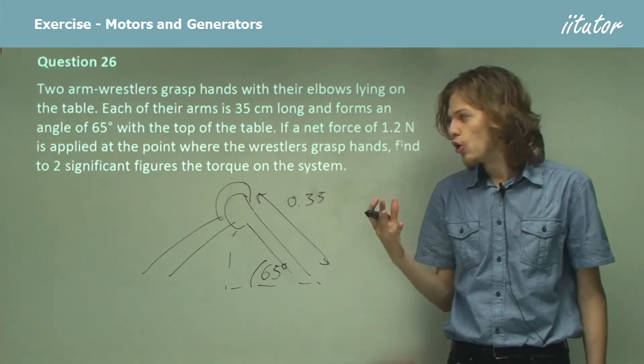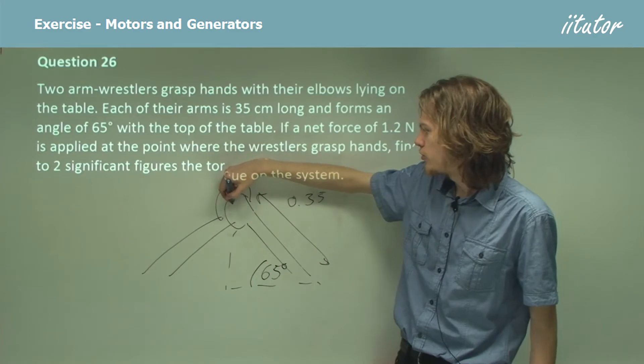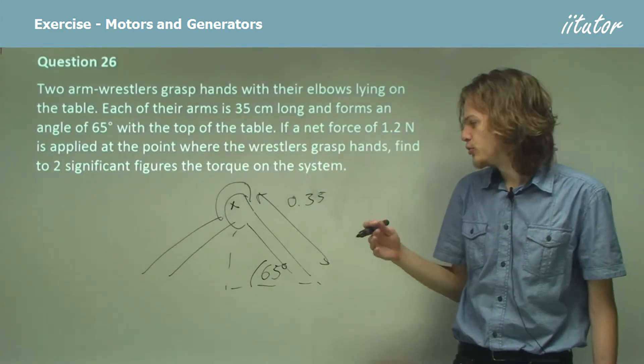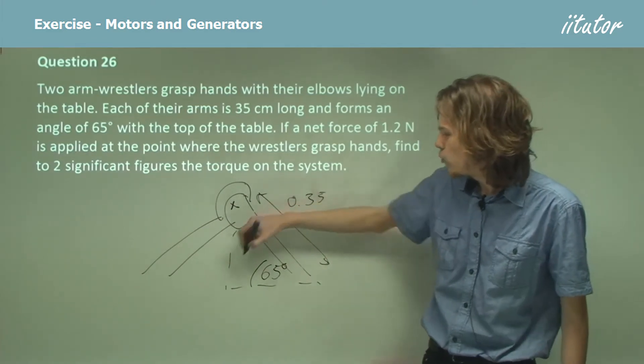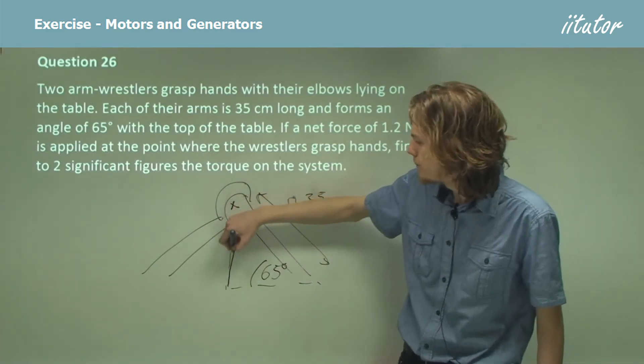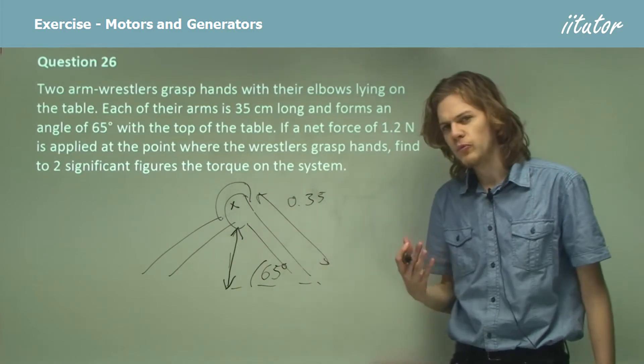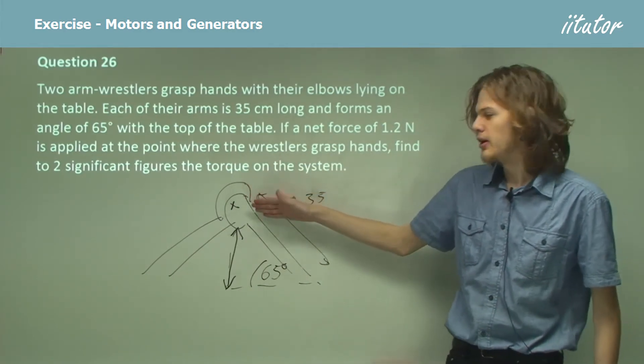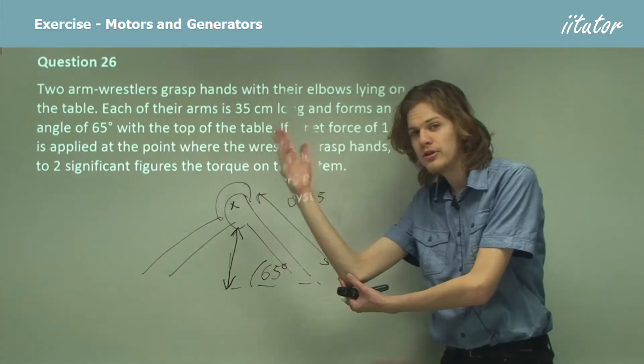And this length is 0.35 meters. What we need to find for torque, if we're applying a force like that, is our distance away from the axis of rotation, which is the bottom of the table. And that will be this distance over here. That's the distance between the force and the axis about which we are rotating, which is where the elbow is.